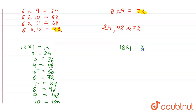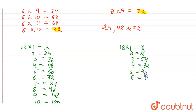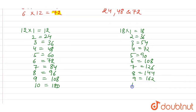Continuing multiples of 12: 12 × 9 = 108 and 12 × 10 = 120. Now the multiples of 18: 18 × 1 = 18, 18 × 2 = 36, 18 × 3 = 54, 18 × 4 = 72, 18 × 5 = 90, 18 × 6 = 108, 18 × 7 = 126, 18 × 8 = 144, 18 × 9 = 162, and 18 × 10 = 180.